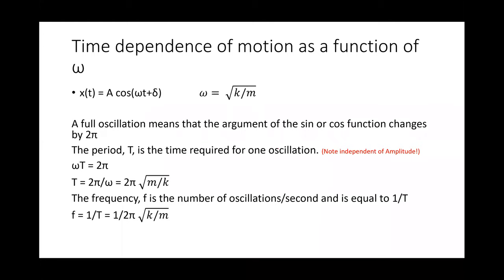The angular frequency omega can be related to more familiar quantities. The period T is the time for one full oscillation and equals 2π over omega. The conventional frequency f is the number of oscillations per second, equal to one over the period, or omega over 2π. For a mass-spring system, omega equals the square root of k over m, where k is the spring constant and m is the mass.